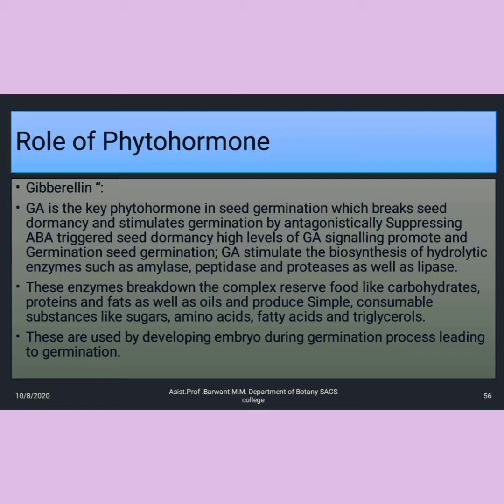GA is the key phytohormone during seed germination, which breaks seed dormancy and stimulates germination by antagonistically suppressing ABA, which triggers seed dormancy. High levels of GA signaling promote seed germination.